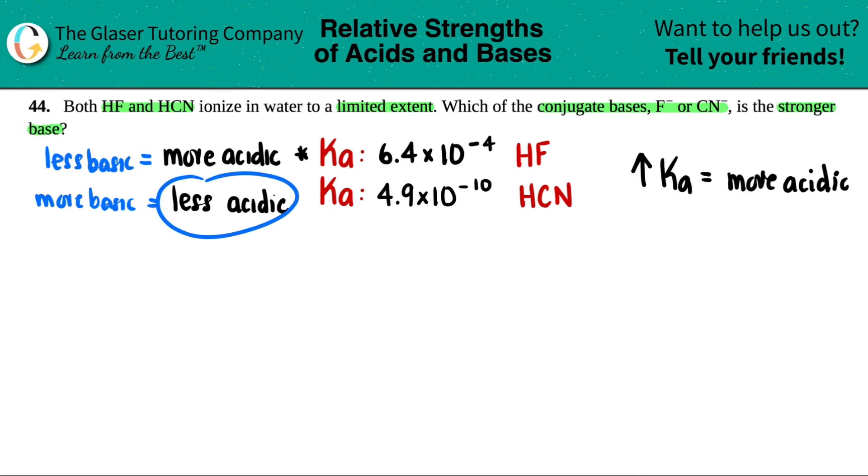If we're less acidic, we're going to be more basic. So the conjugate base of HCN would be more basic. HCN is less acidic out of the two. So that means that CN minus would be more basic, and that's the stronger base.